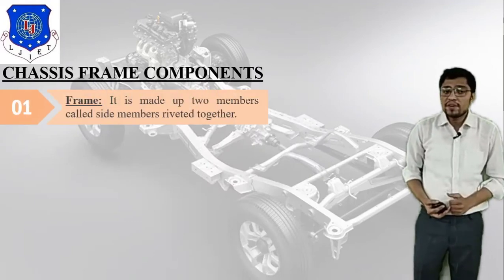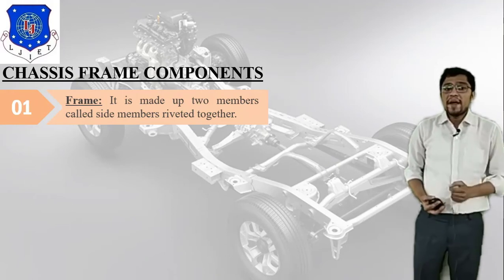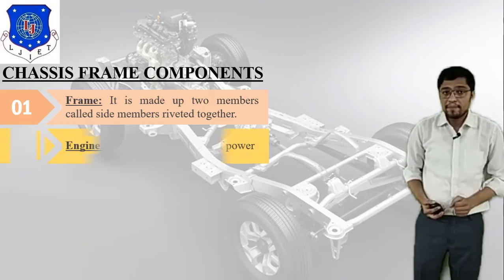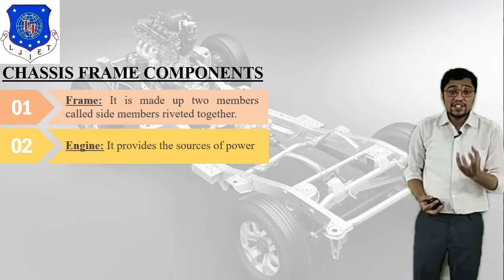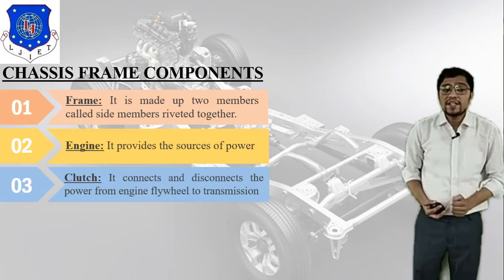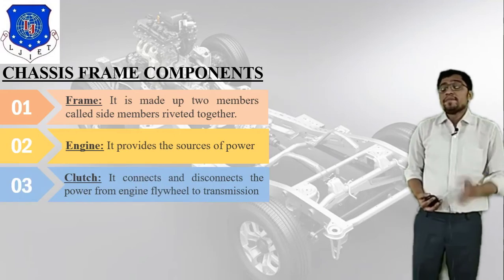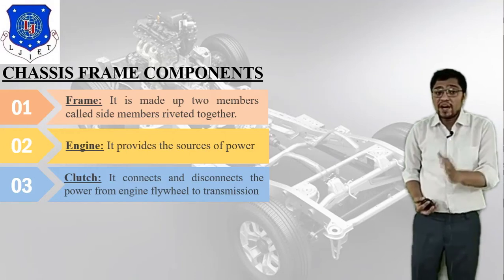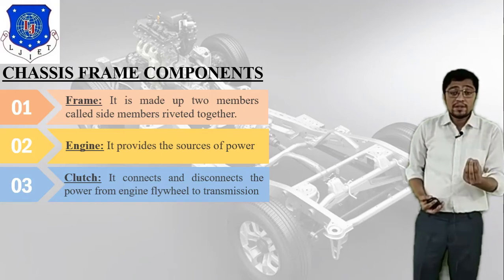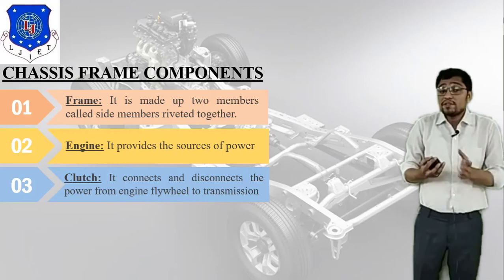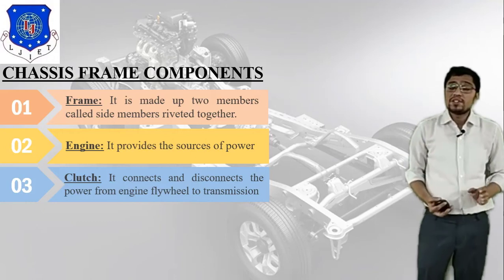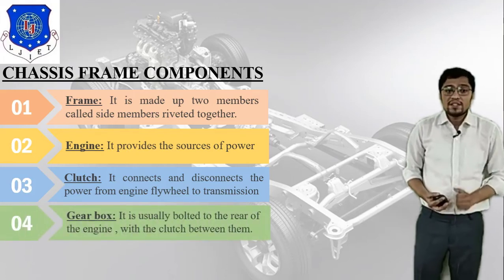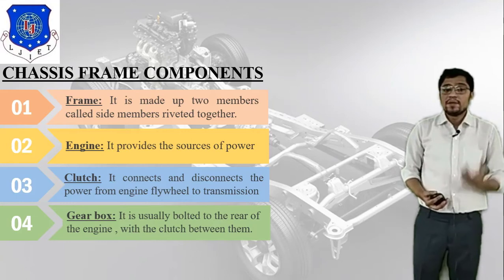Basic chassis frame components: first is the frame, which is made up of two members called side members joined together — the outside structure is called the frame. Second is the engine, which provides the source of power. Third is the clutch, which connects and disconnects the power from the engine flywheel to the transmission. Fourth is the gearbox, which is bolted to the rear of the engine with the clutch between them.